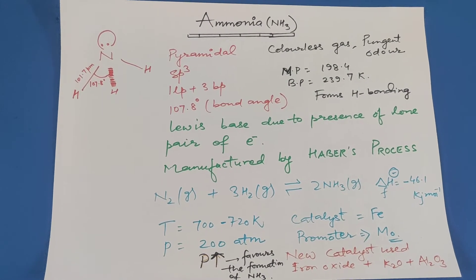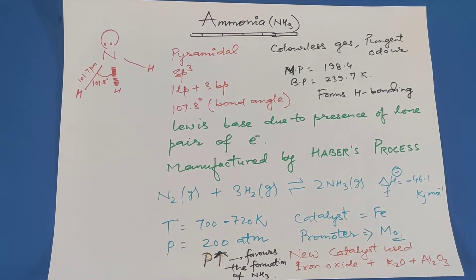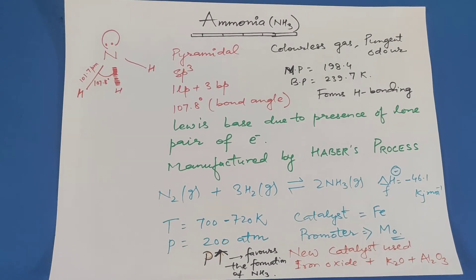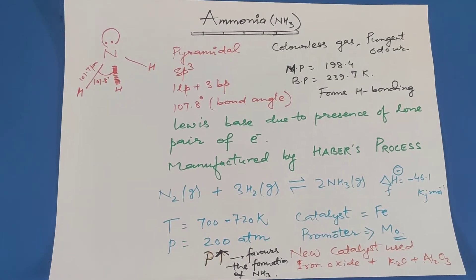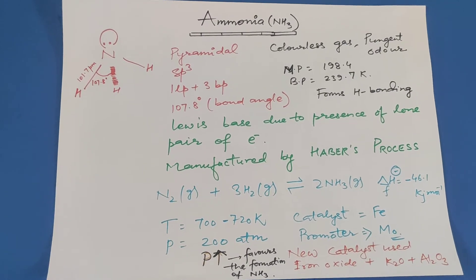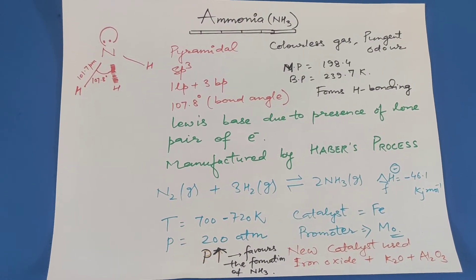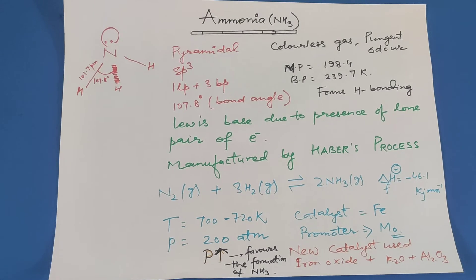The optimum temperature for carrying out the preparation of ammonia by Haber's process is 700 to 720 Kelvin. The pressure is high. That means high pressure favors the formation of ammonia. Pressure is 280 atmospheres.